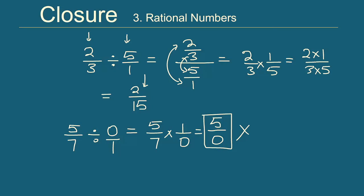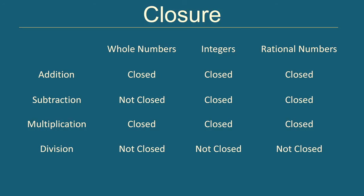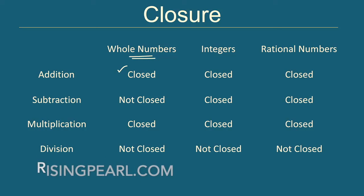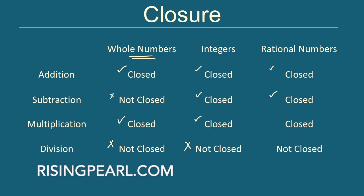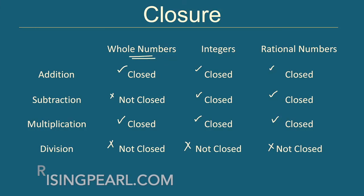Let's quickly sum this up. For whole numbers: closed under addition and multiplication, but not under subtraction or division. For integers: closed under addition, subtraction, and multiplication, but not under division. For rational numbers: closed under addition, subtraction, and multiplication. For division, they are almost closed, but not quite, because dividing by 0 makes the result undefined.